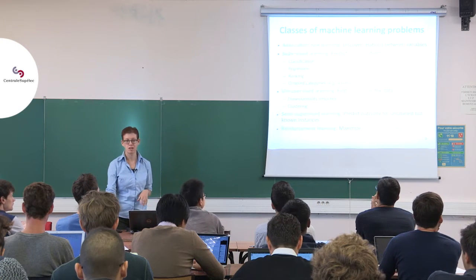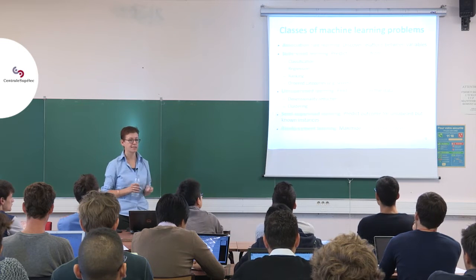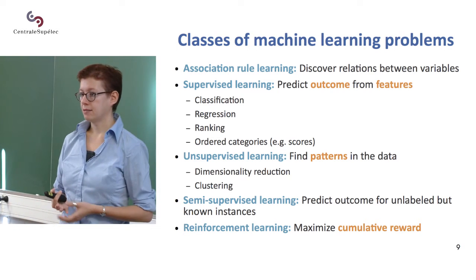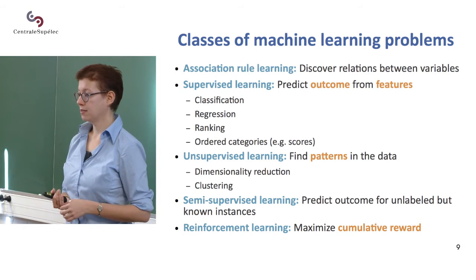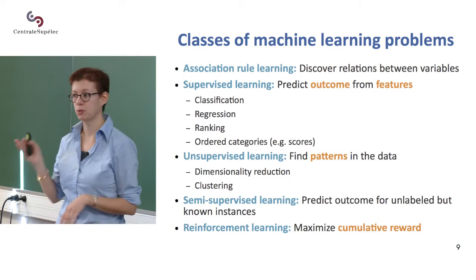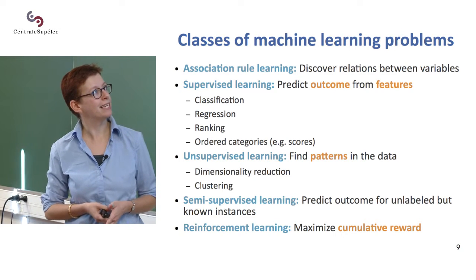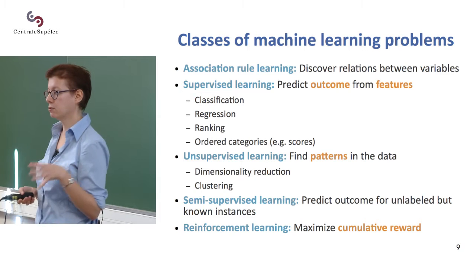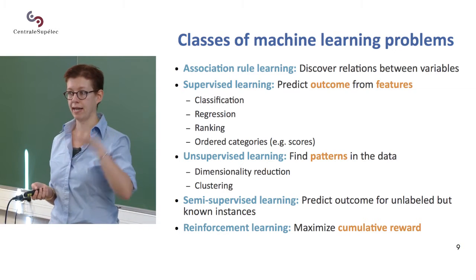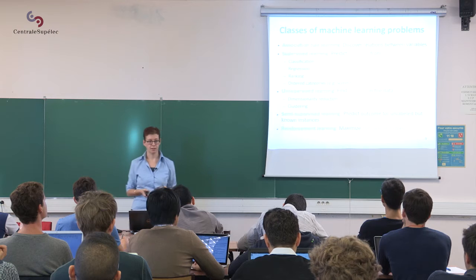What types of machine learning problems do we have? I've talked a bit about market basket analysis — analyzing that people who have kids buy diapers and milk, and people who don't buy beer and hamburgers. This is called association rule learning: learning that a person who buys diapers is more likely to buy milk than a person who doesn't.